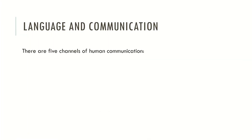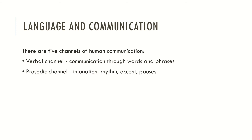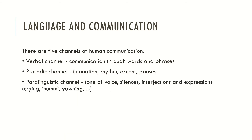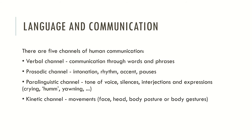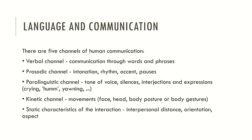There are five channels of human communication. The verbal channel, which is communication through words and phrases. The prosodic channel, which is the intonation, rhythm, accent and pauses that we use during our speech. The paralinguistic channel, which refers to the tone of voice, silences, interjections and expressions such as crying or yawning — noises we use to communicate without words. The kinetic channel, which refers to movements of the face, head, body posture or body gestures. And static features of the interaction, which refers to interpersonal distance, orientation of the body, and the appearance of a person.